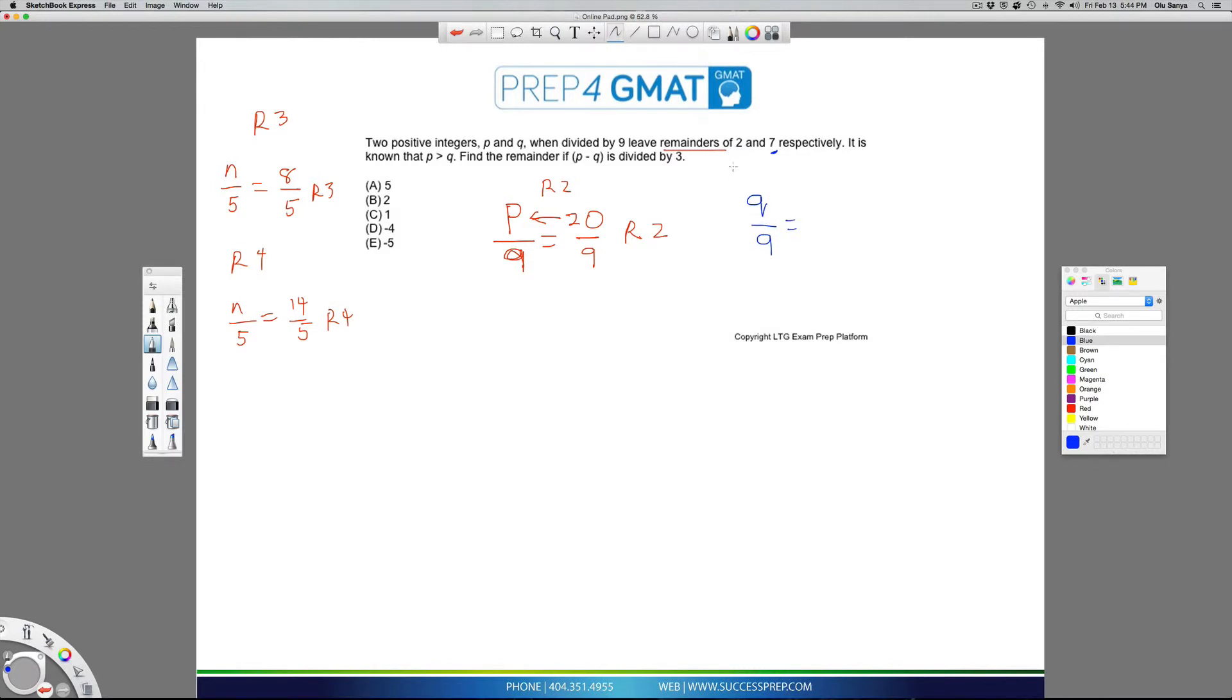But in this case, because if you look at the way this question is set up, we want to make sure that our P is greater than our Q. So I'm not going to do what I did here where I picked 18. I'm actually going to pick a lower number here, just to ensure that the Q ends up being lower than the P. So in this case, what does nine go into perfectly? Well, nine goes into nine.